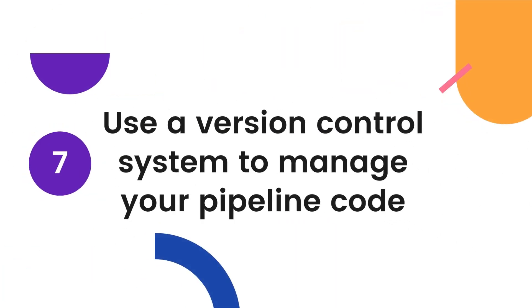Number 7: Store your pipeline code in version control, such as Git, to manage changes and collaborate with others. This makes it easy to track changes, revert to previous versions, and collaborate with others.